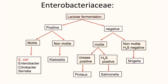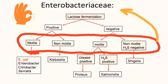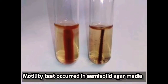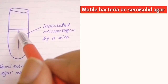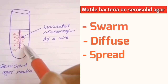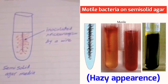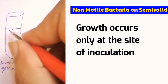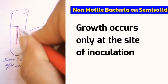Motility test is very important in the identification of gram-negative bacilli, especially in the Enterobacteriaceae family. The test is performed in semi-solid agar media. In semi-solid agar media, motile bacteria swarm and give a diffuse spreading growth that is easily recognized by the naked eye, while non-motile bacteria only grow at the site of inoculation without diffusion.